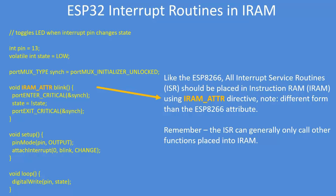For the ESP32, placing the interrupt routine in instruction RAM is very similar. In this case the attribute is called IRAM_ATTR — similar but different to the ESP8266. Just keep in mind that the ISR, the interrupt service routine, can't generally call another function unless that too is also placed in instruction RAM, but doing so also improves speed of operation.